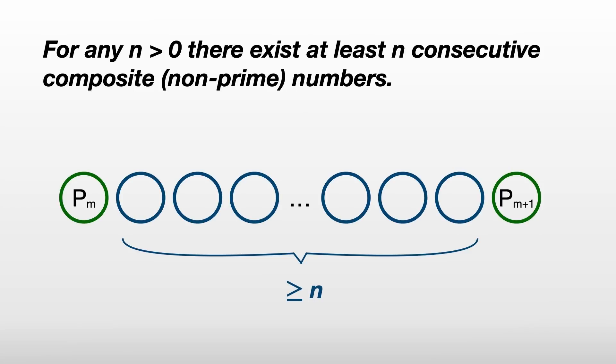Notice, if we have a string of n composite numbers between two primes, then these primes will have a gap of at least n. When I first encountered this, it was as an exercise in a textbook, and I got given the clue, think factorial. If you want to have a go at proving this yourself, by all means, pause the video.